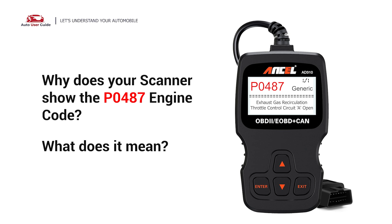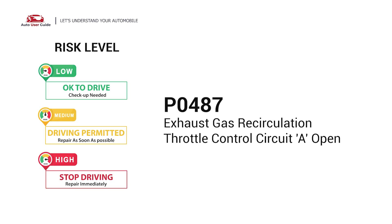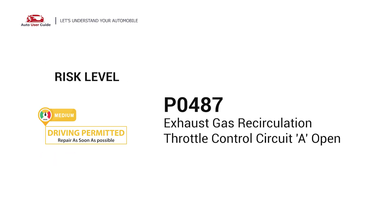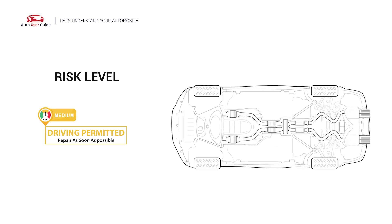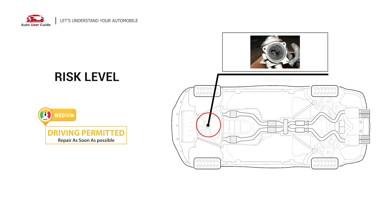Why does your scanner show the P0487 engine code? What does it mean? P0487 is a diagnostic trouble code for Exhaust Gas Recirculation Throttle Control Circuit. It indicates that there has been a malfunction in the exhaust gas recirculation system. Under this circumstance, short-distance driving is permitted, but your vehicle should be repaired as soon as possible.